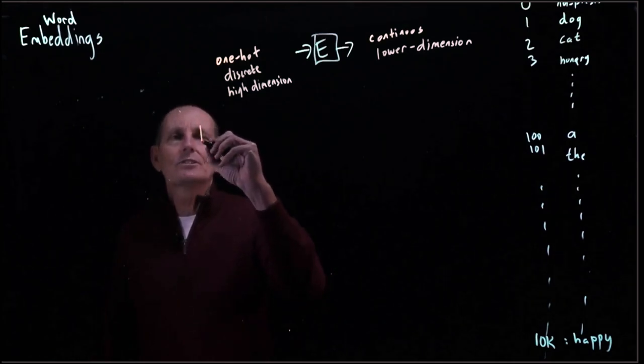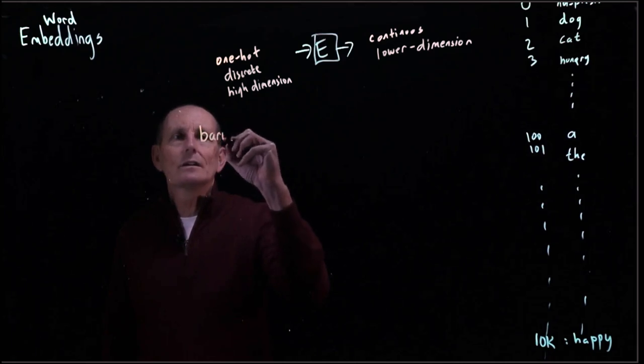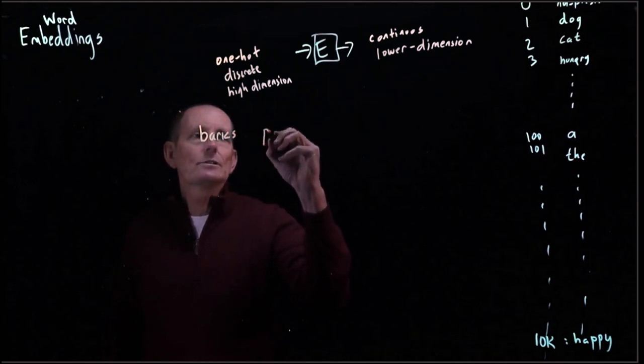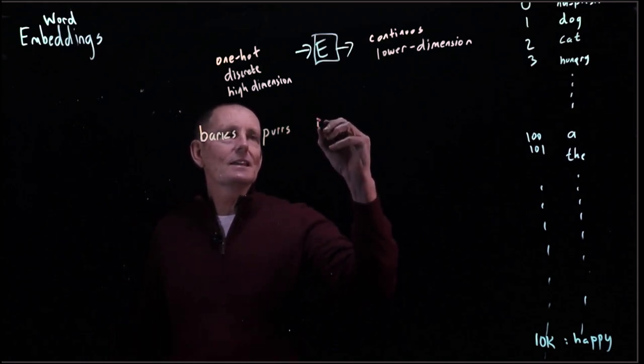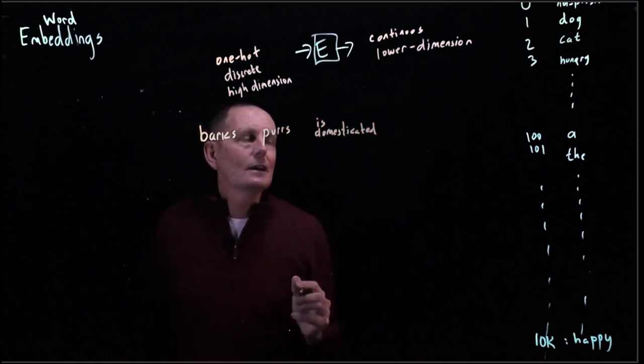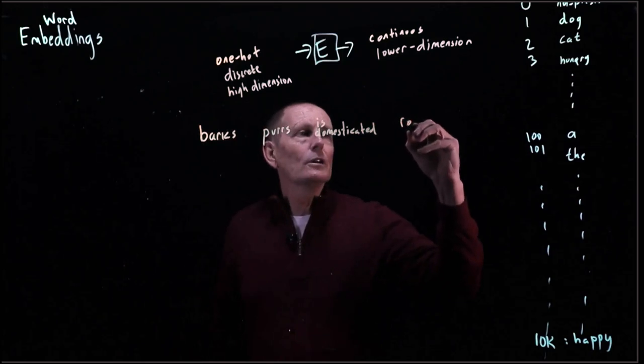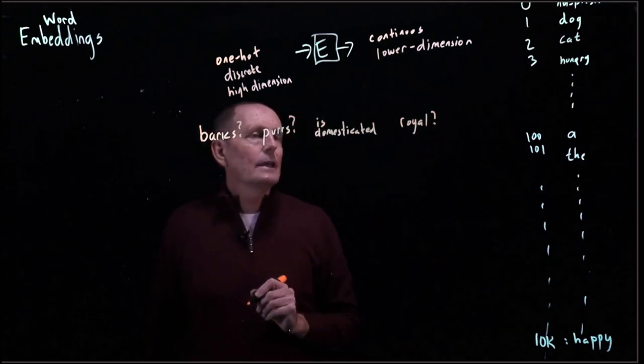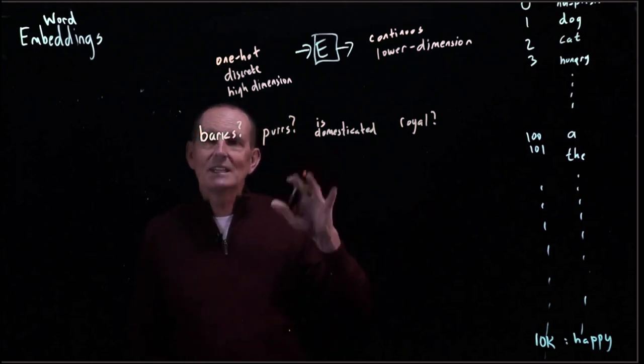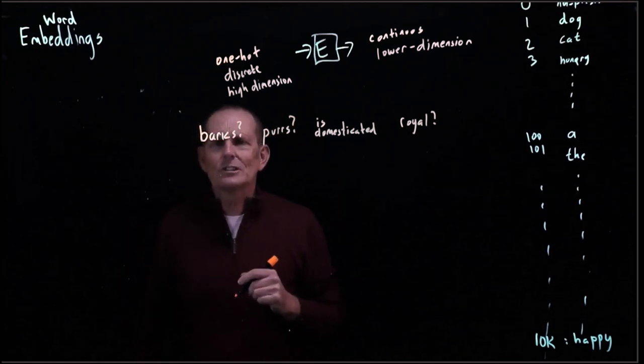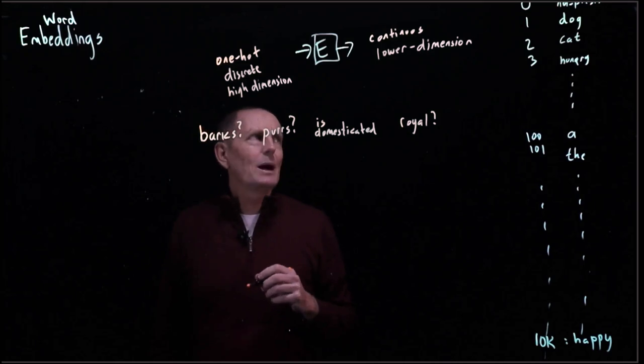So let's say we're going to have some features like barks, purrs, is domesticated, let's say is royal. So we're going to have four dimensions, but it's going to be continuous.